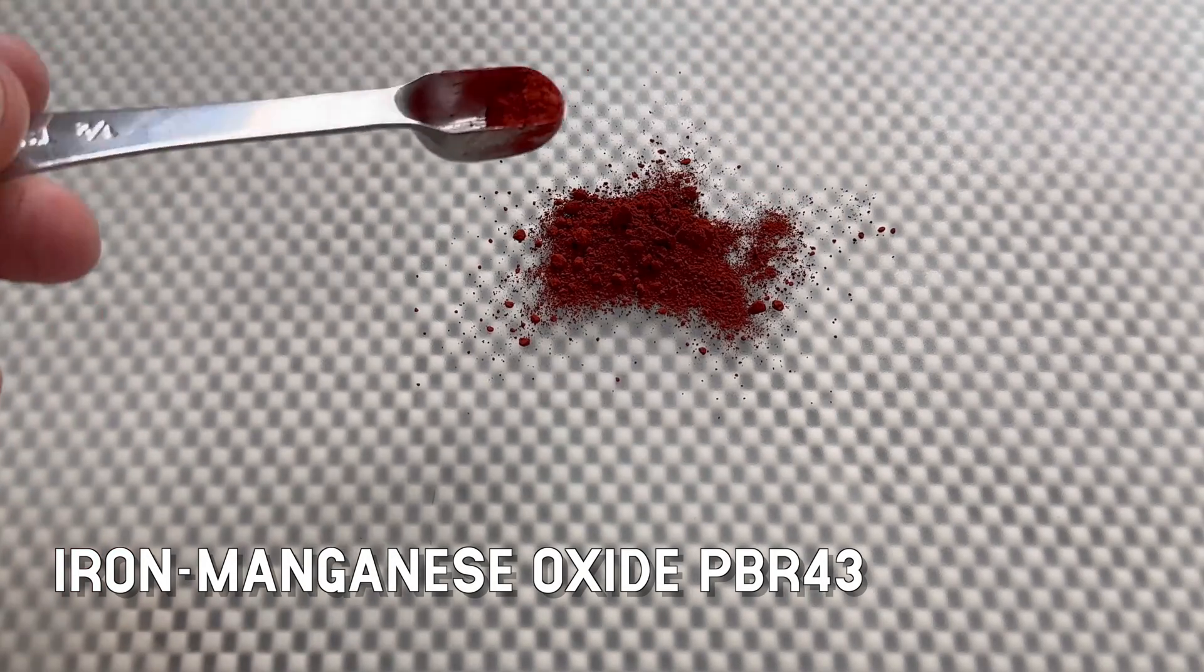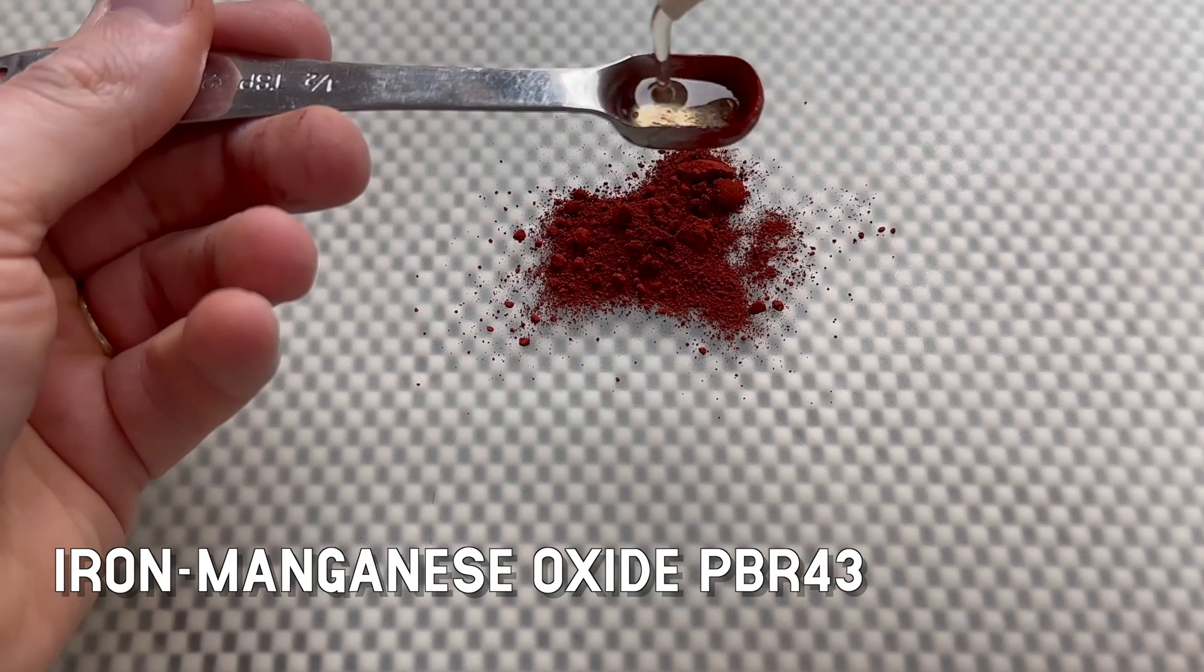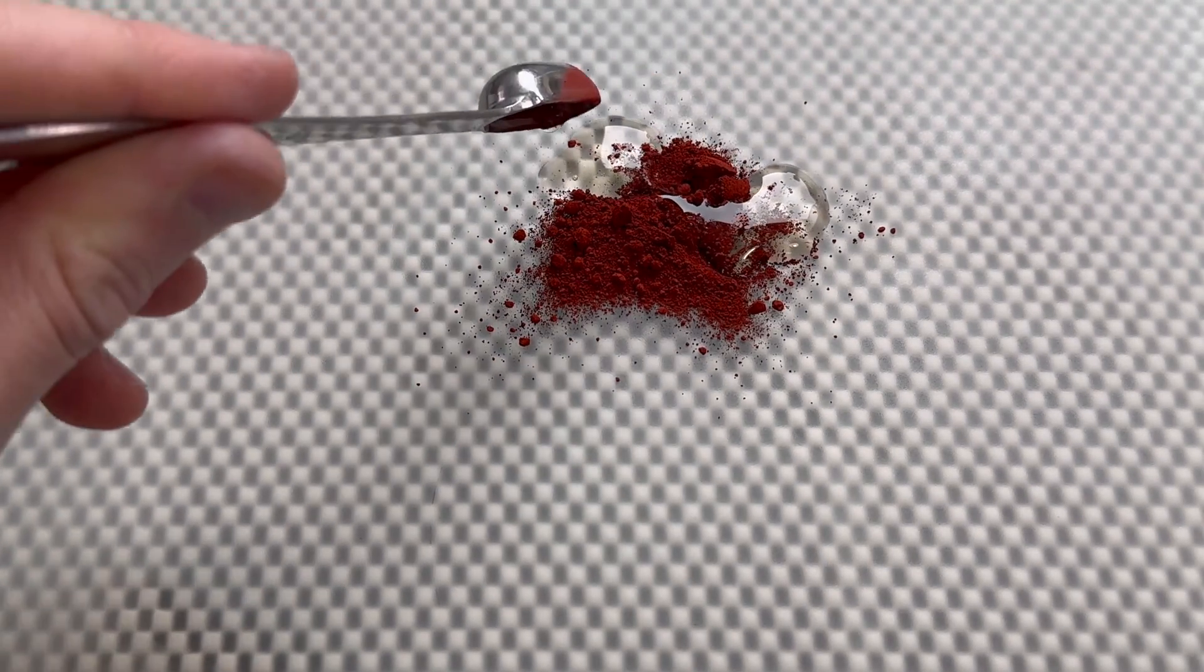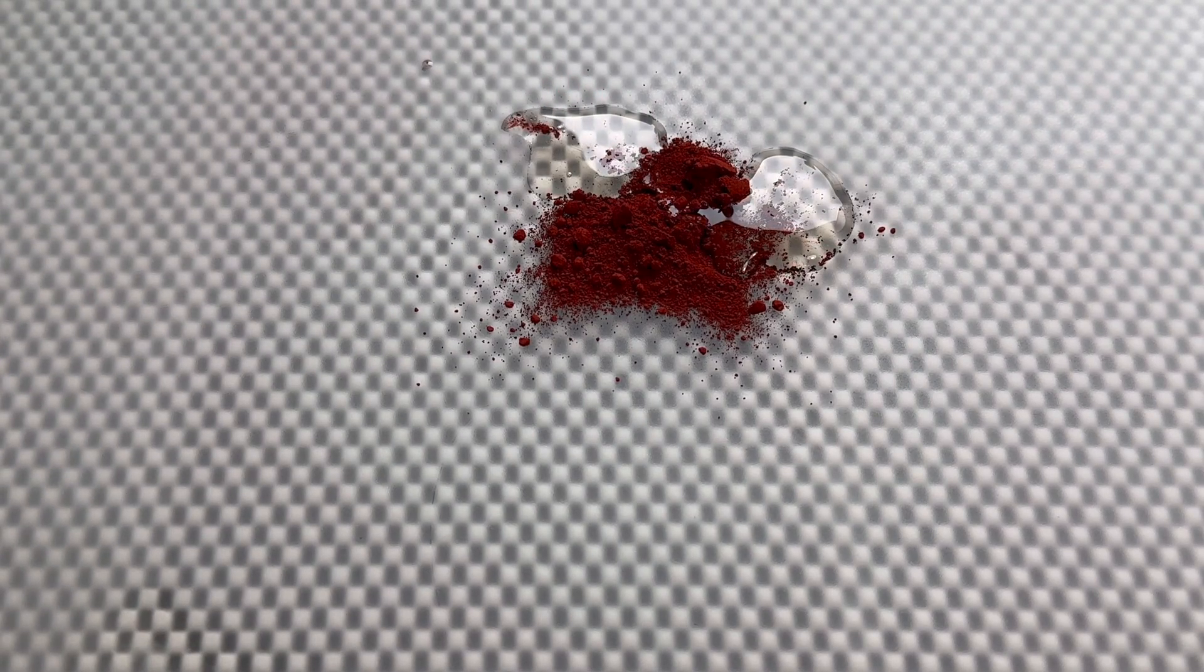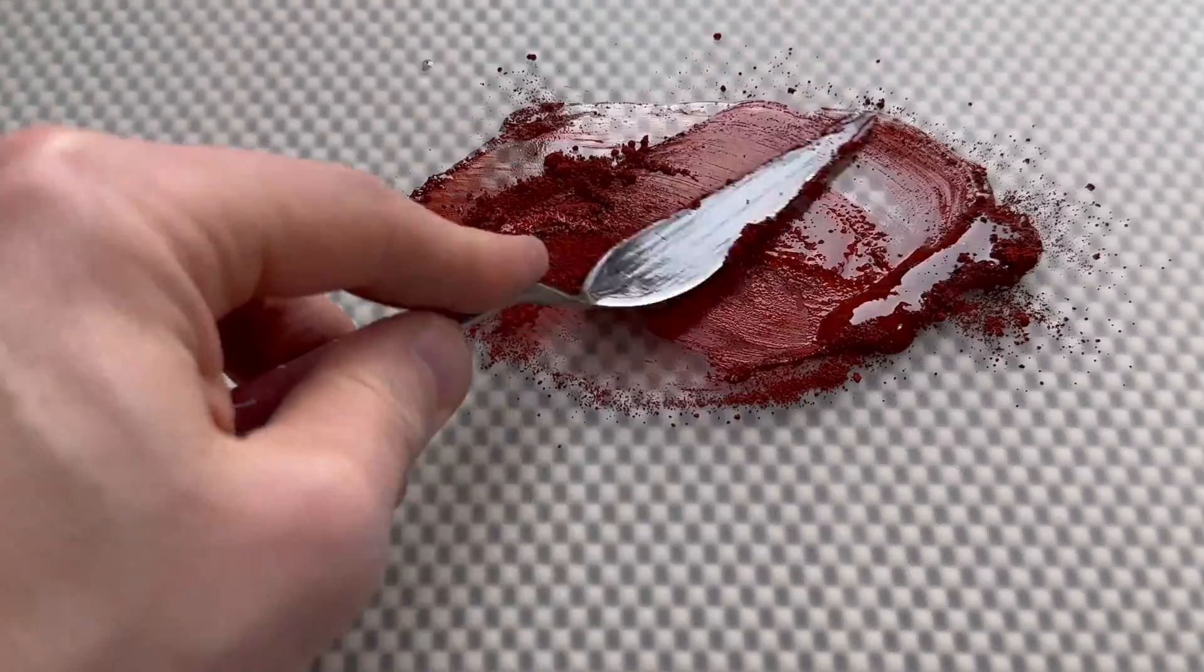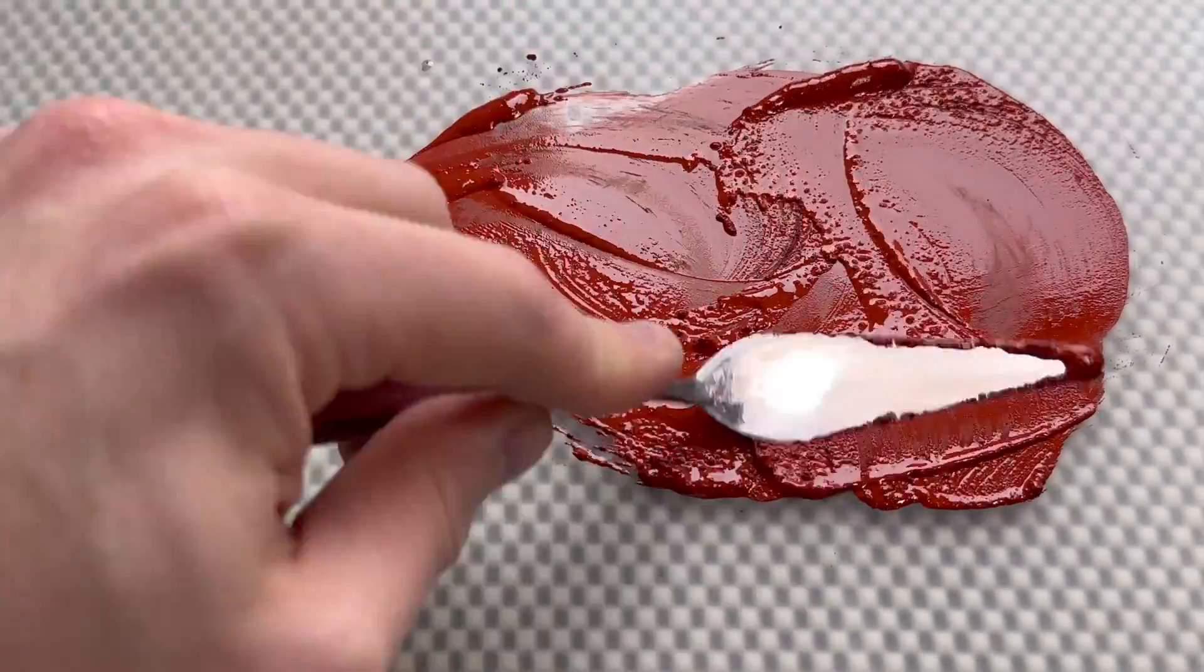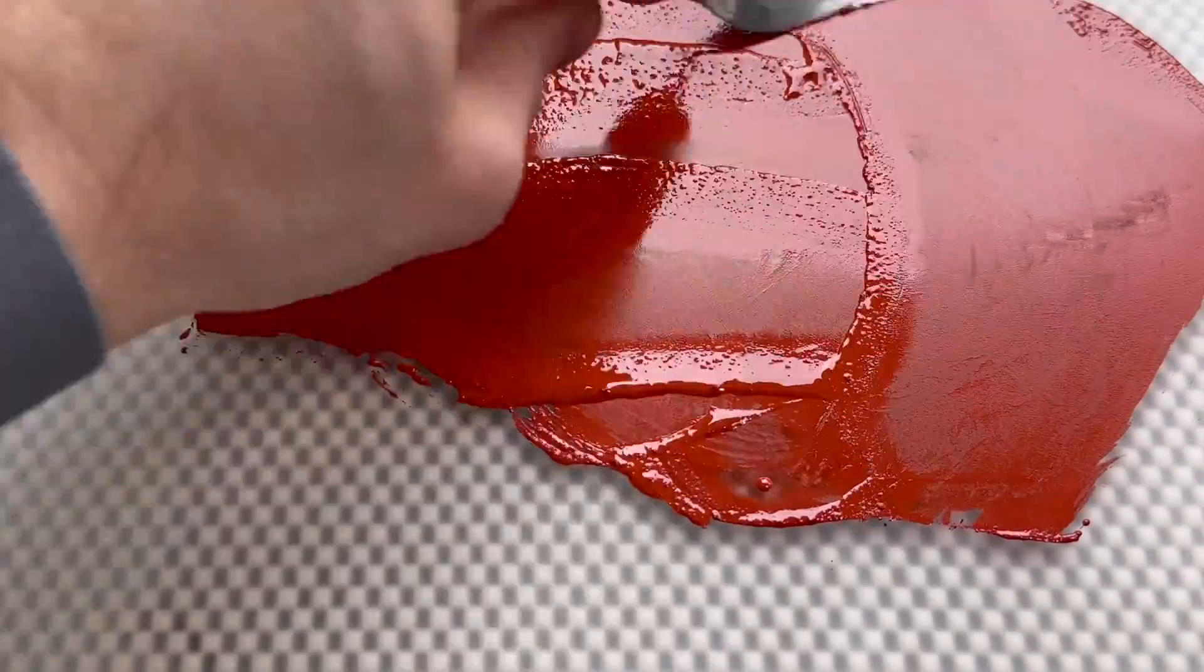Next we have PBr43, a little less known of all the pigments that I'm going to show. It is a synthetic iron manganese oxide, and the iron is kind of recognizable by the red color of this pigment.